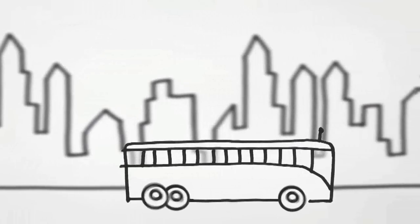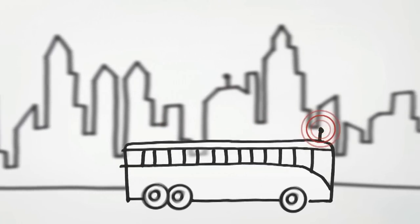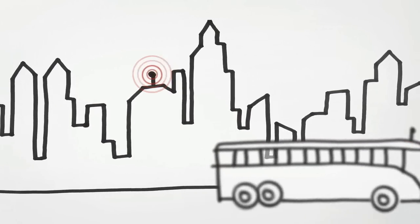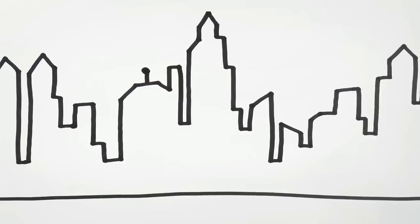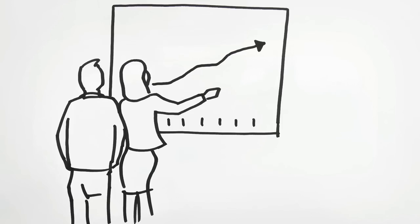As you travel along, your journey is being reported back to the bus company's headquarters. Thanks to all the data they're receiving from their connected buses, they know exactly who's going where, and they can use this information to optimize their timetables and travel routes.